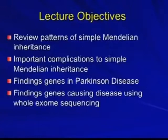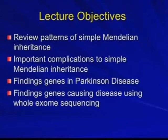So here's just a general lecture format so you don't lose the big picture. We're going to review basic patterns of simple Mendelian inheritance, talk about complications of those, use Parkinson's disease as an example, and then take that to finding genes causing disease using whole exome sequencing. I'm really only going to talk about complex disease at the end after we've done a whole bunch of other material.